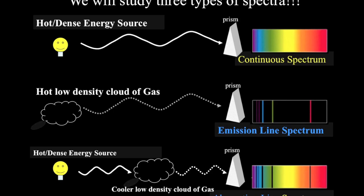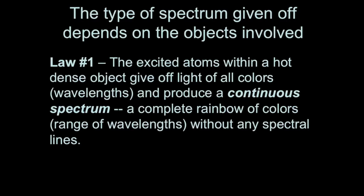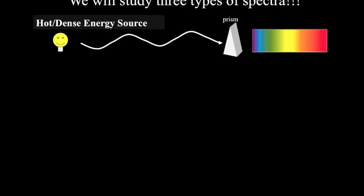Let's talk about how each of these are produced. In physics, the principles that govern how different types of spectra are produced are called Kirchhoff's laws. And one of these says that when the atoms inside a hot, dense object are excited or energized, they give off light of all the different colors and make a continuous spectrum. And so it looks like a rainbow with all the colors blended together.